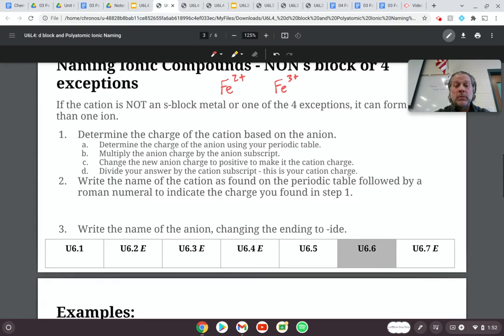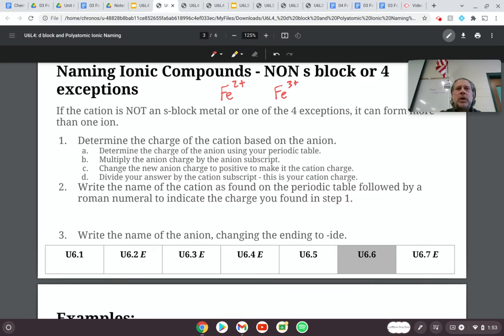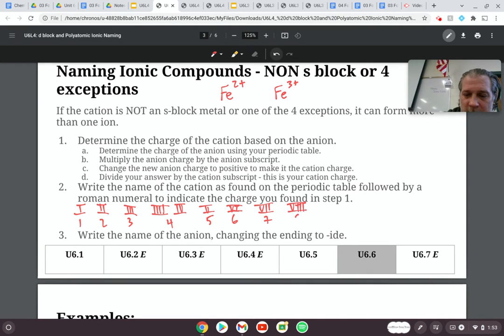So an I is a 1, an II is a 2, an III is a 3, an IV is a 4, a V is a 5, a VI is a 6, VII is a 7, VIII is an 8, IX is a 9, and X is a 10.